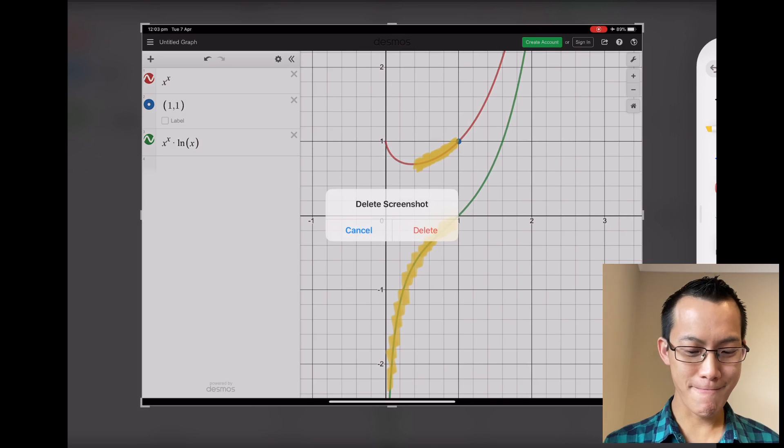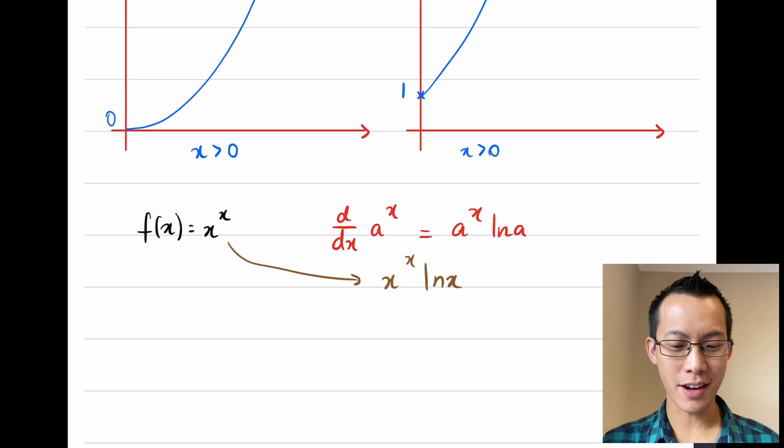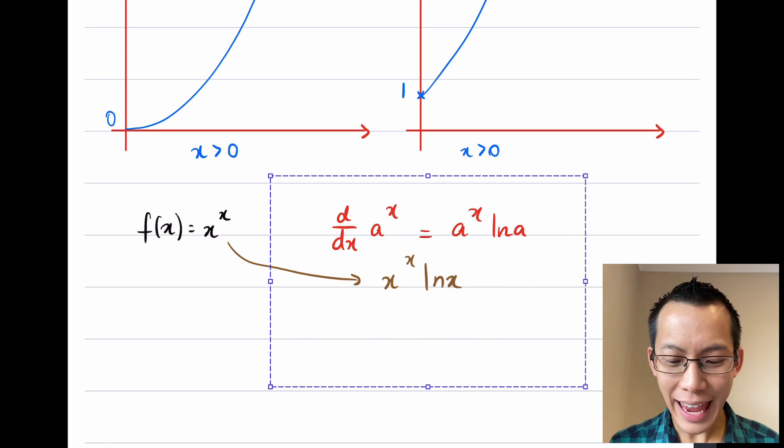We've established that our way of differentiating polynomials doesn't work. Our way of differentiating exponentials, which have a base like a, it doesn't work either. It doesn't give us the result we want. So what can we do?